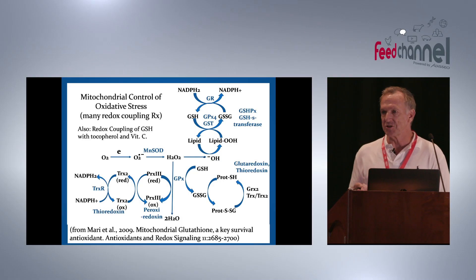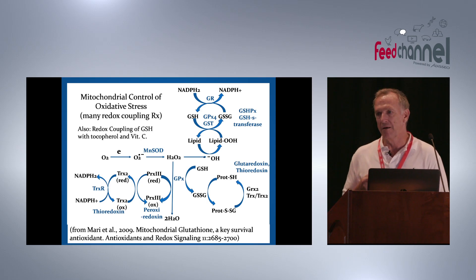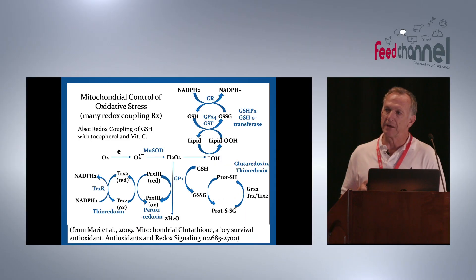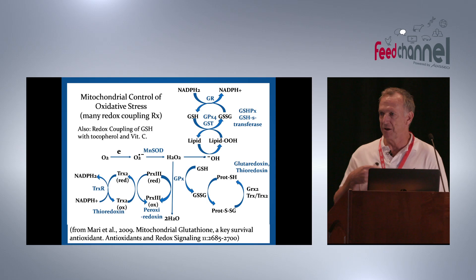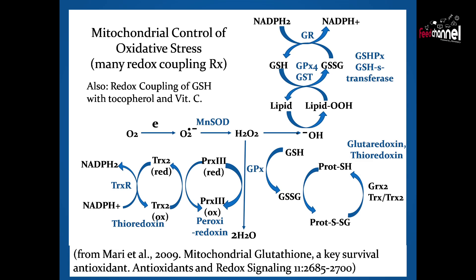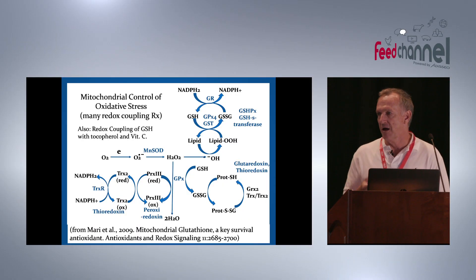Glutathione is at the center of a whole lot of redox coupling. It's in millimolar concentrations in virtually all cells, so it's very central. Subsequent speakers will be talking about selenium with glutathione peroxidase. It should also be recognized that glutathione is very beneficial in regenerating vitamin E or tocopherol from oxidized form, and dehydroascorbate back to vitamin C. So it's central to much of the antioxidant protection.